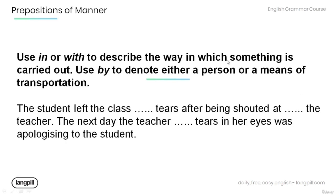Let's review and practice. Remember that we use 'in' or 'with' to describe the way in which something is carried out, and we use 'by' to denote either a person or a means of transportation. Fill in the blanks using the appropriate preposition of manner: 'The student left the class ___ tears after being shouted ___ by the teacher. The next day, the teacher, ___ tears in her eyes, was apologizing to the student.' Answer: 'in tears... by the teacher... with tears in her eyes.'